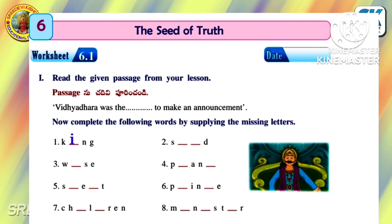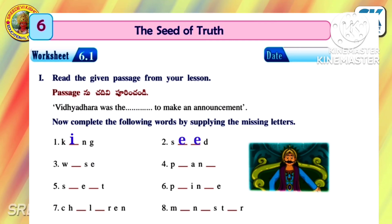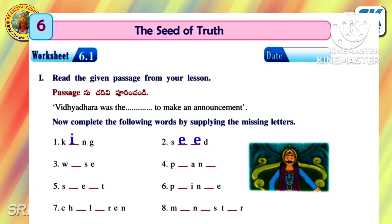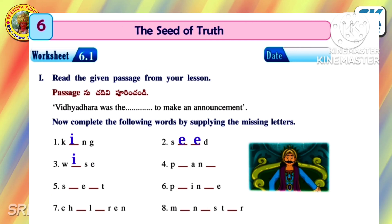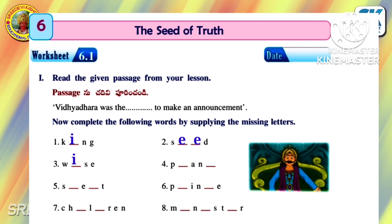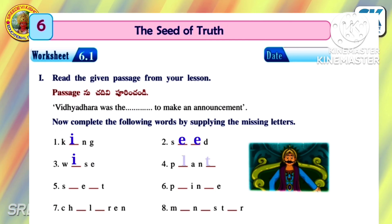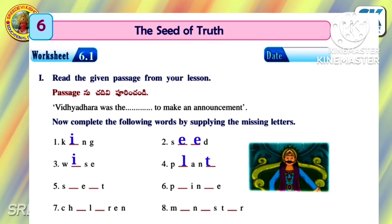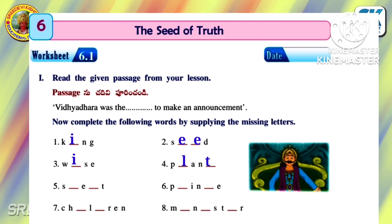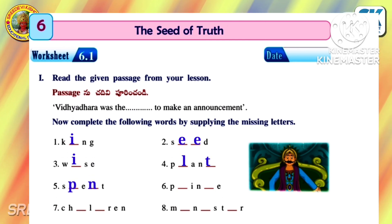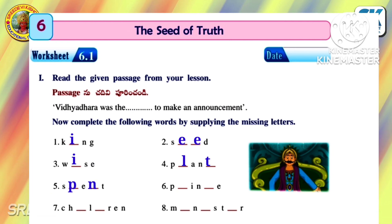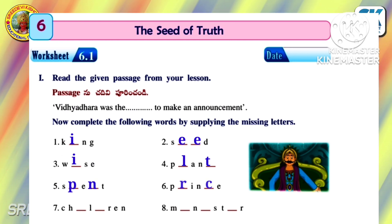First one: K-I-N-G, King. Second one: S-E-E-D, Seed. Third one: W-I-S-E, Wise. Fourth one: P-L-A-N-T, Plant. Fifth one: S-P-E-N-T, Spent.